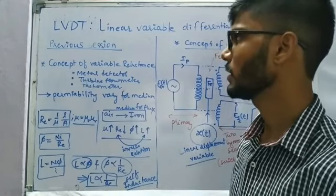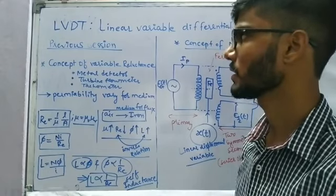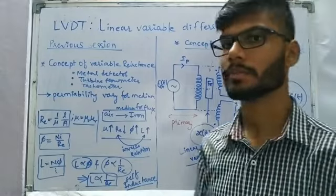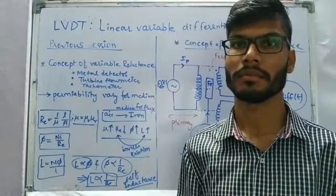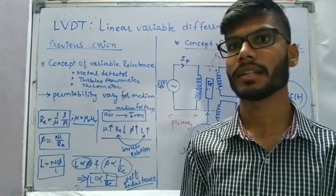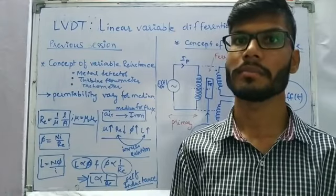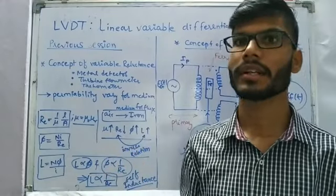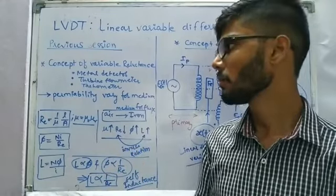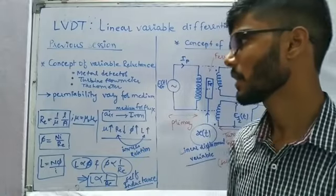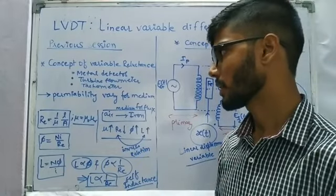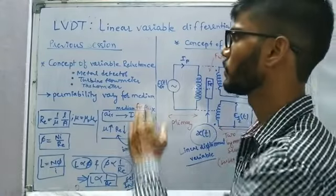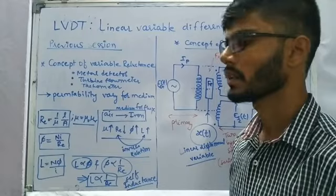The reason behind all three practical applications was that permeability is going to vary with respect to the medium. If we have air as the permeable medium, relative permeability is one. If we take iron as the permeable medium, the relative permeability is going to be greater than one. And if the permeability of the medium is varying, we can understand how the reluctance is going to vary.